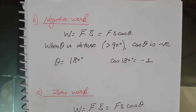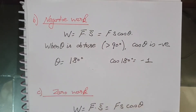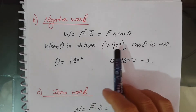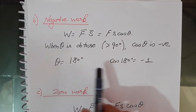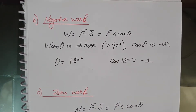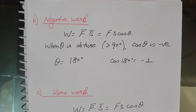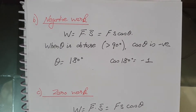For negative work: W = Fs cosθ. The condition is when theta is obtuse — greater than 90 degrees — cosθ is negative, or theta is 180 degrees and cos 180° = −1. For example, when a body is thrown upward, the gravitational force acts downward while displacement is upward, so the angle is 180 degrees and work done by gravity is negative. Also, when a body is moved over a rough horizontal surface, the frictional force opposes the motion, so work done by the friction force is negative — because friction acts opposite to the direction of displacement.